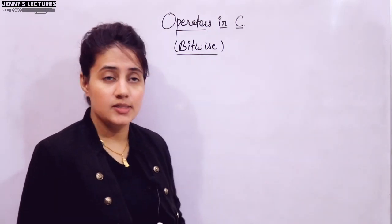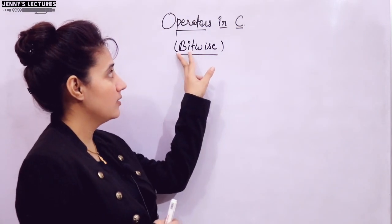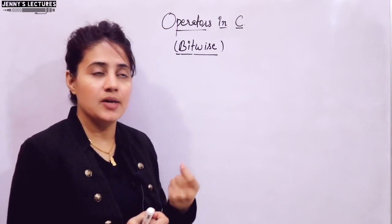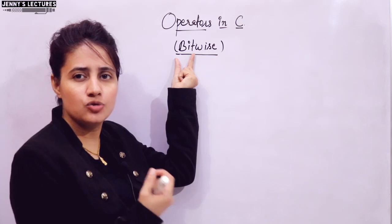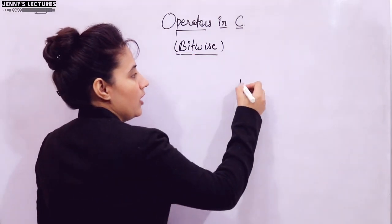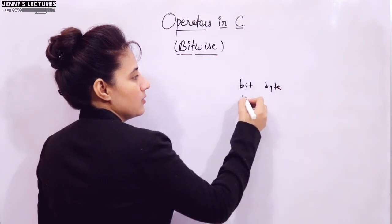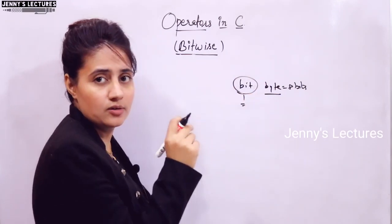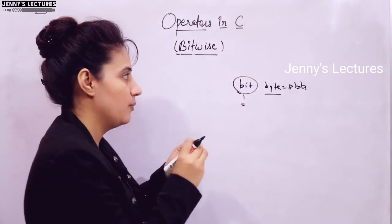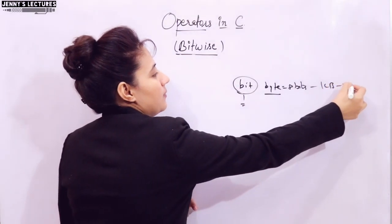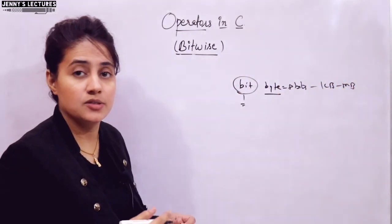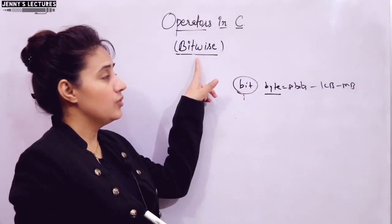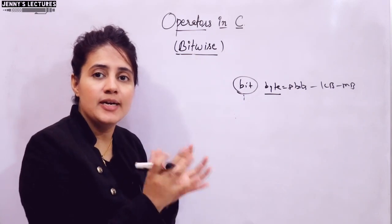Let us discuss what are bitwise operators in C. As the name suggests, these operators are used to perform operations at bit level. A bit is the smallest storage unit in computer memory. We have first bit, then byte — a byte is equal to 8 bits. After that you have kilobyte, megabyte, gigabyte, terabyte, and so on. Using these operators in C we can perform bit-level expressions.